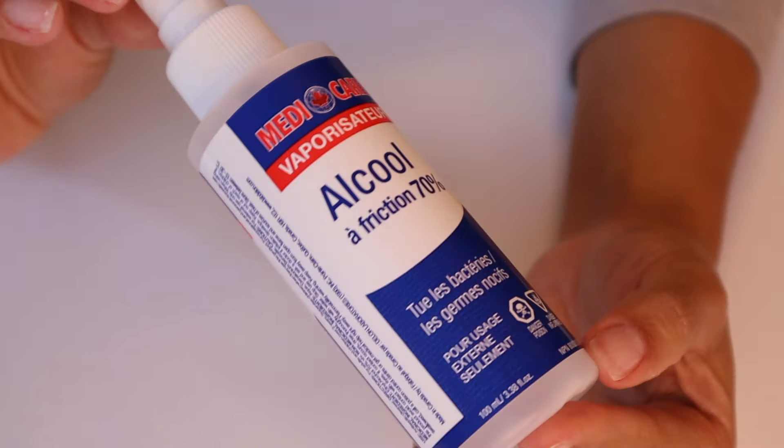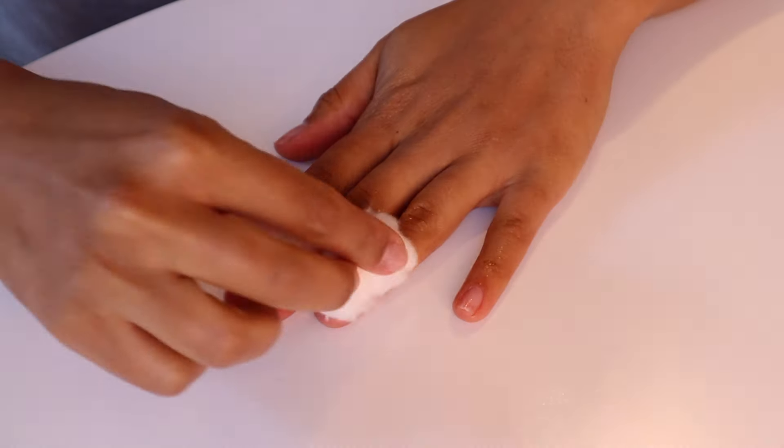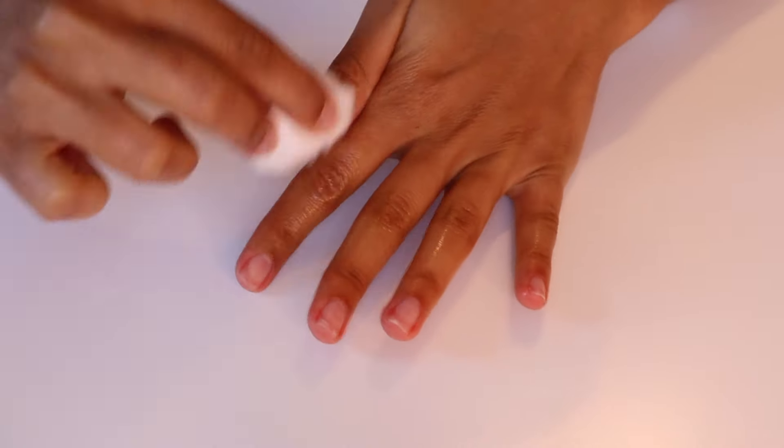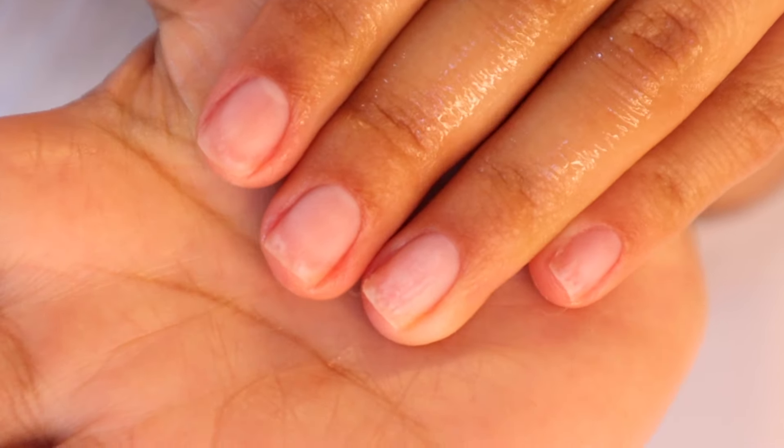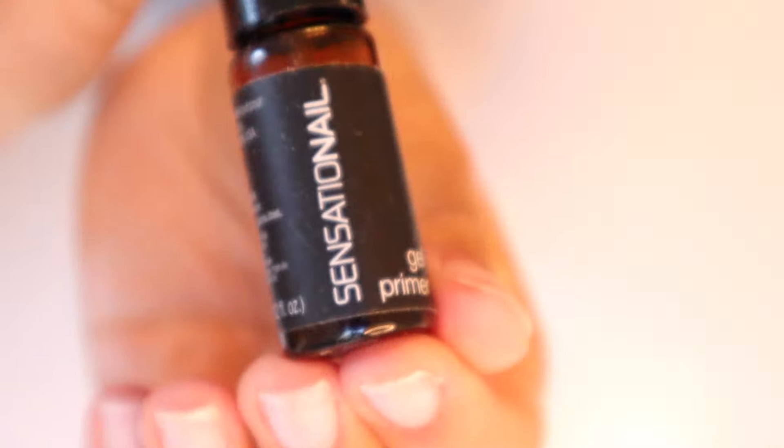The next step is going to be to clean your nails with some alcohol. This is going to help remove any oil or any other product that is on your nails, and it's going to help the polish adhere much better. And now your nails should look like this. They are beautiful and ready to be painted.